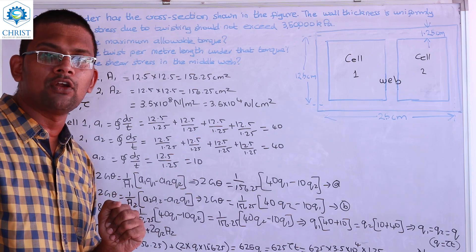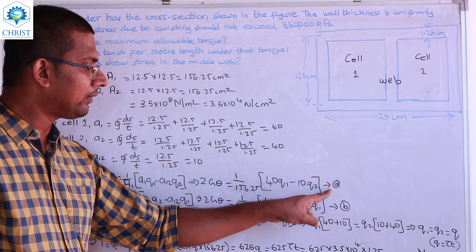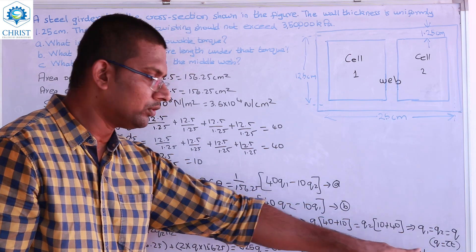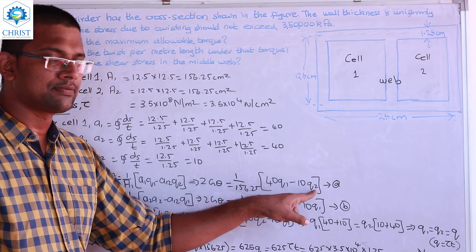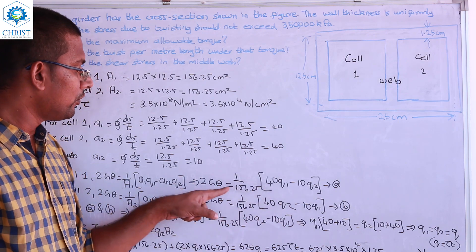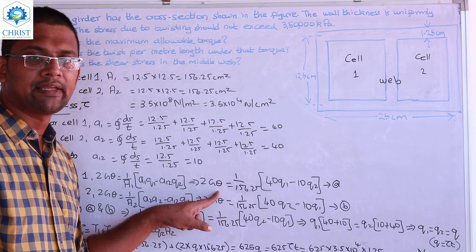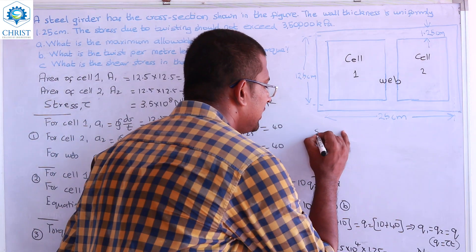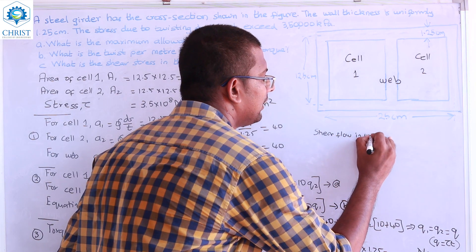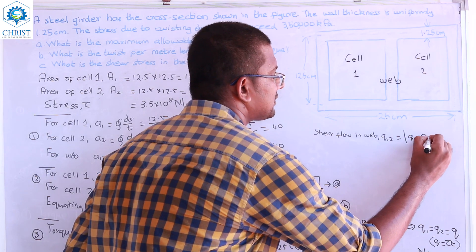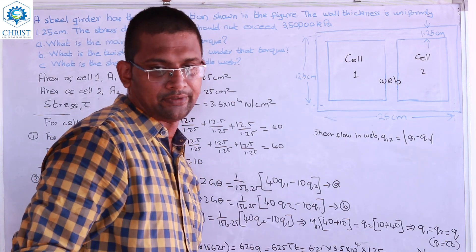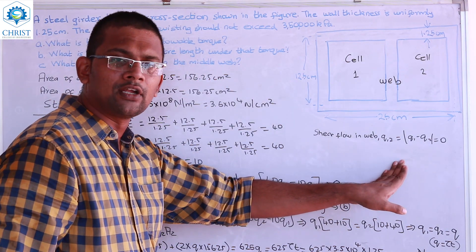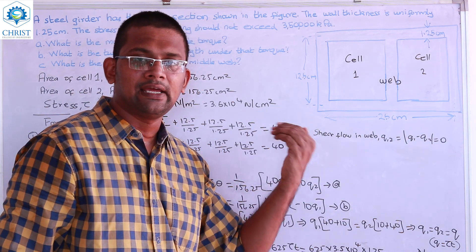For the second question, the angle of twist per unit length: using 2Gθ = (1/A1)[a1·q1 − a12·q2] with known values, we can solve for θ. For the third question — shear stress in the middle web — the shear flow in the web is q12 = q1 − q2. Since q1 = q2 due to symmetry, q12 = 0, and therefore the shear stress in the middle web is zero.